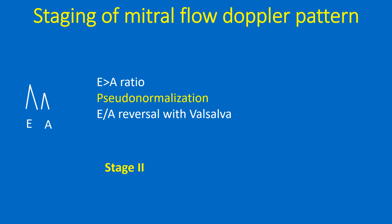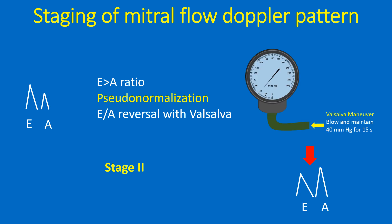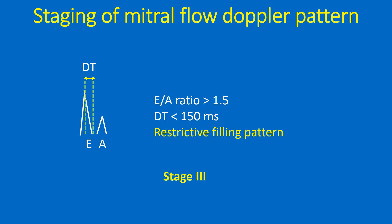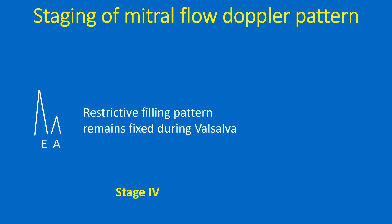In Stage 2 diastolic dysfunction, the E wave becomes taller due to elevated left atrial pressure — this is called pseudonormalization of the filling pattern — and E by A reversal can still be demonstrated during Valsalva maneuver. In Stage 3, the E wave is very high so that the E by A ratio is more than 1.5 and DT is below 150 ms — this is the restrictive filling pattern. In Stage 4, this restrictive filling pattern remains fixed even during Valsalva maneuver.